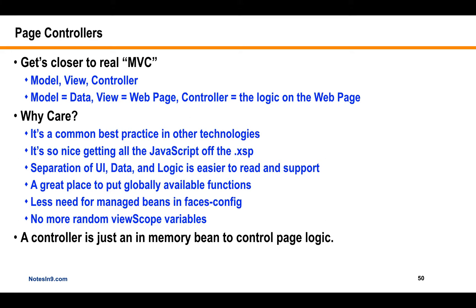One of the biggest wins is no more random view-scope variables thrown on the page to control rendering or hold a value. Forget about view-scope variables — you can just add a method to the page controller. The controller is just an in-memory bean, a plain old Java object, to control your page logic. All your logic goes there, so you have separation between your page logic, the page UI, and your model logic.